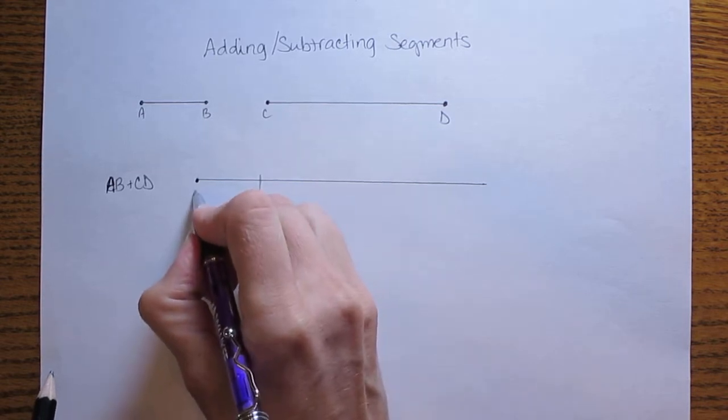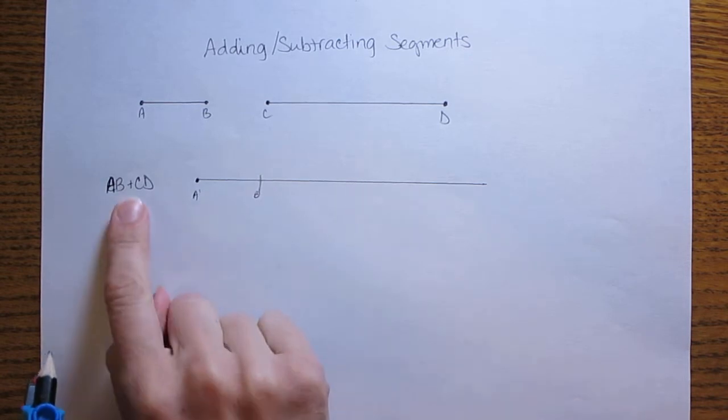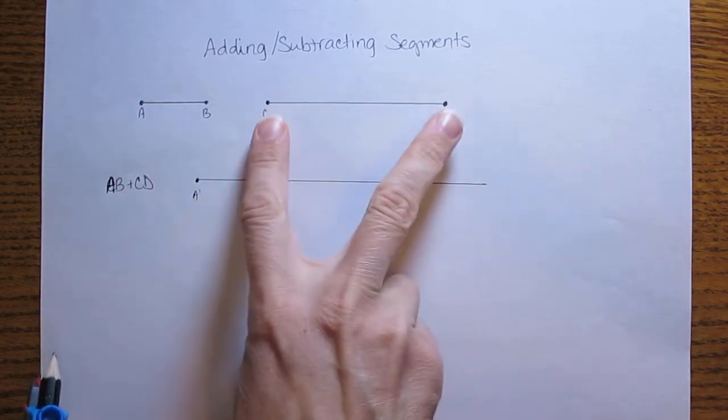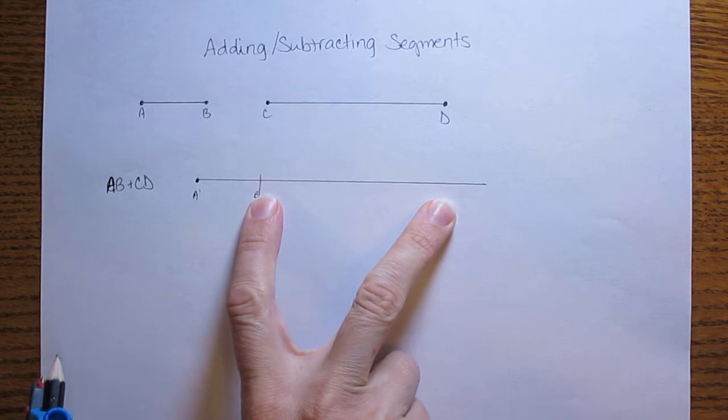From here to here this is A prime, B prime. Now to add the two segments together I also want to copy segment CD onto the same segment right after AB.